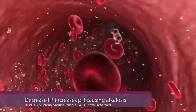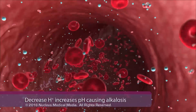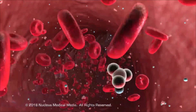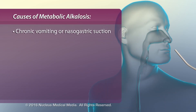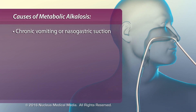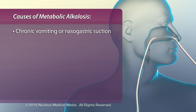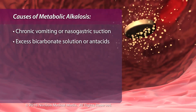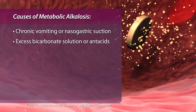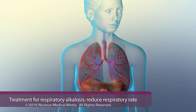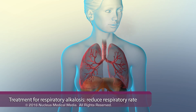Metabolic alkalosis occurs when hydrogen ion concentration decreases or bicarbonate increases. Conditions causing metabolic alkalosis include depletion of gastric acid through chronic vomiting or nasogastric suction, and introduction of excess bicarbonate, such as intravenous bicarbonate solutions or antacids.